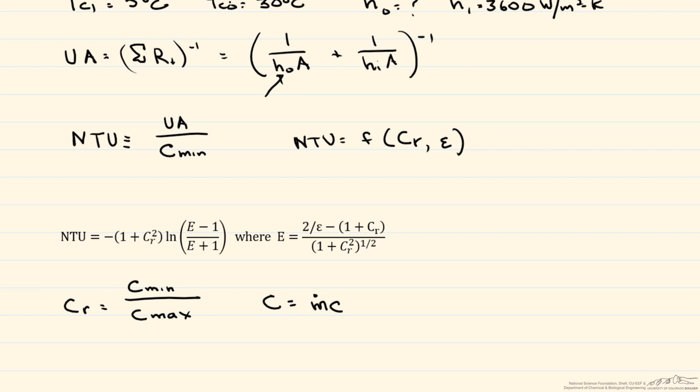So we can find the C for the water because that's equal to 0.15 kilograms per second multiplied by its heat capacity, 4184 joules per kilogram Kelvin. And so our heat capacity rate of the water is 627.6 watts per Kelvin.